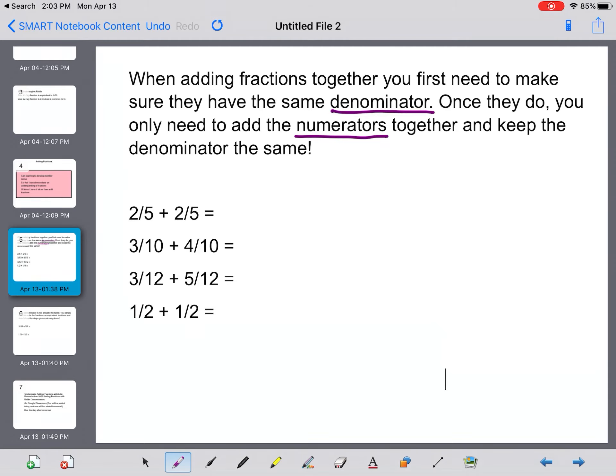So for the first one, we've got 2 over 5 plus 2 over 5. I know my denominator is going to be 5 and my numerator is going to be 2 plus 2, which is 4.